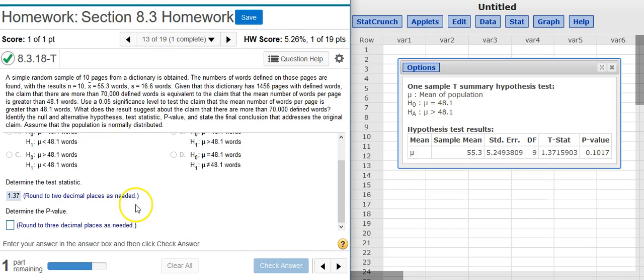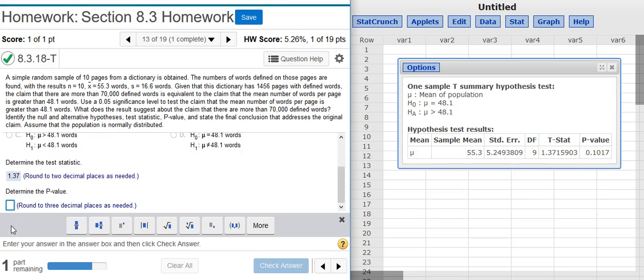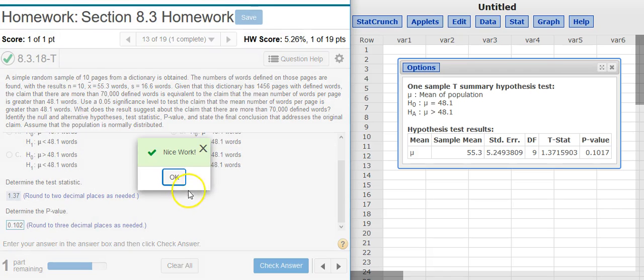Now the next part of the problem asks for the p-value. We've already done all the work to calculate it. Look back here at the results window. It's that last value there in the table, right next door to our test statistic. We're asked to round to three decimal places. Nice work.